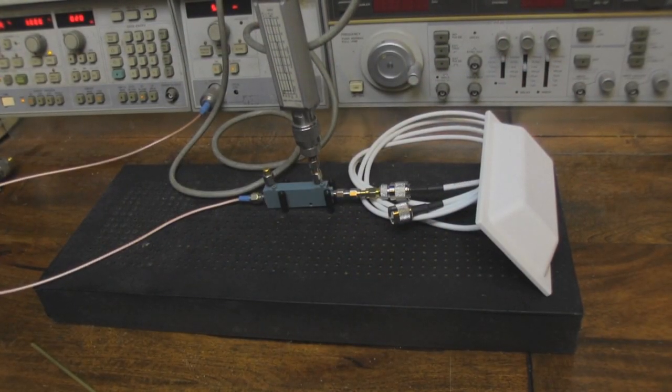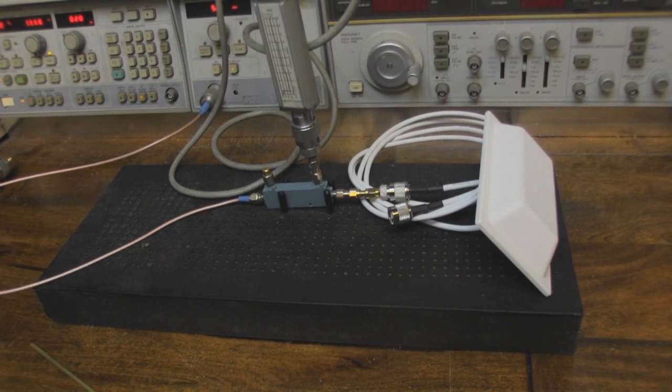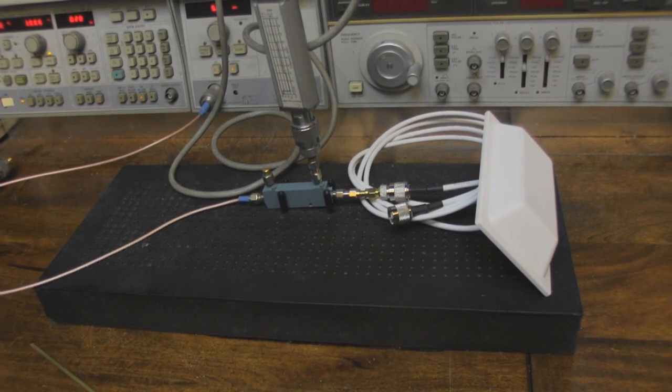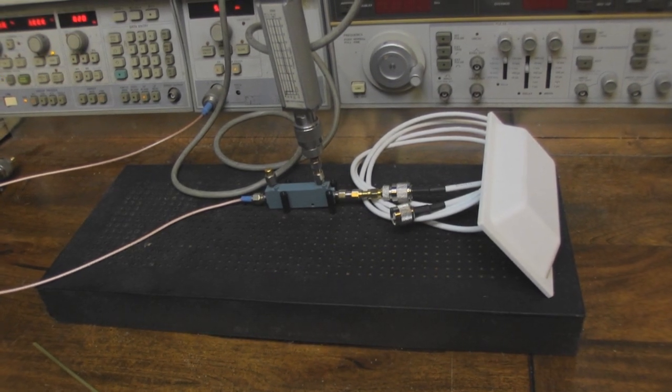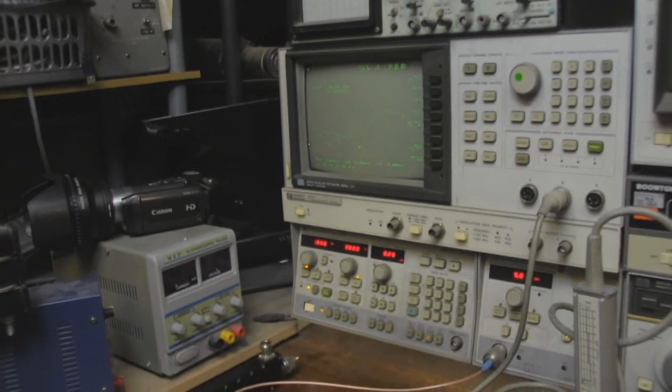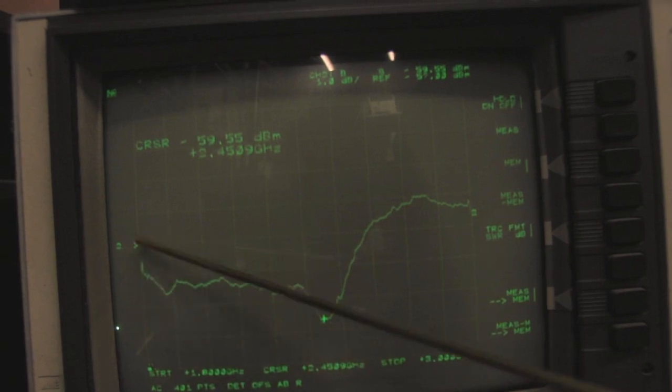Here's the antenna under test. I can only connect one up at a time, but I'm presuming they're both the same on the inside. We'll take a look at that when we take it apart. I've just got the one connected up and we've got a nice little output on the network analyzer.